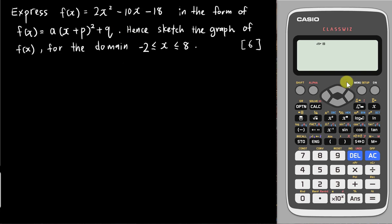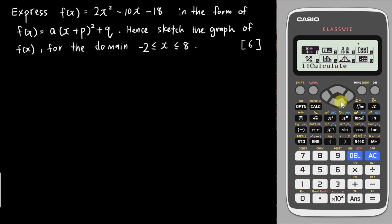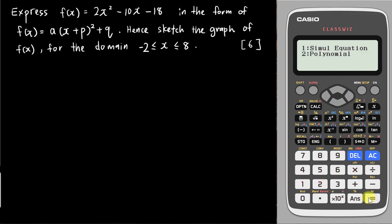In the exam you still need to show your workings, but using the calculator it's quite easy. Go to the menu, then go down twice to find the equation. You'll see 'Equation and Function' — press Enter, then choose Polynomial which is 2, and choose power 2 since this is x².